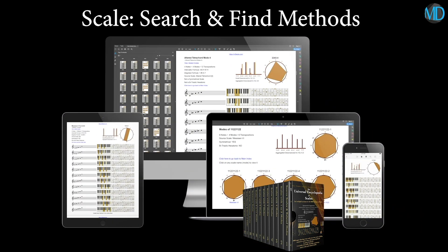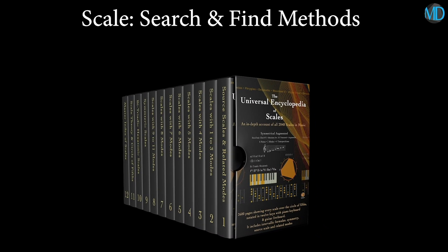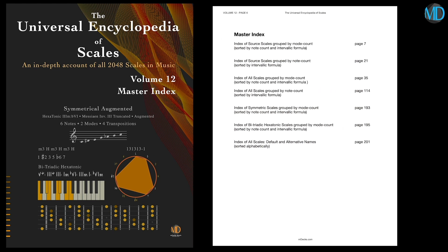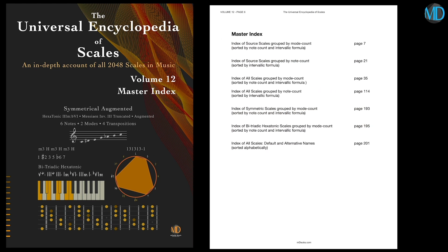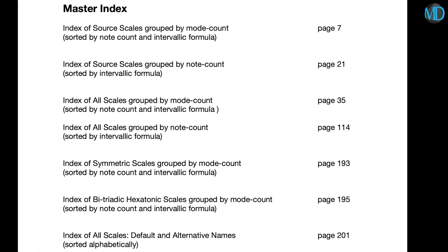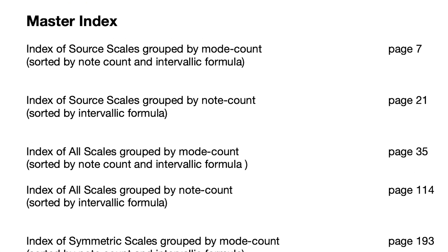We'll talk about the PDF version later on, but let's start with the paperback version. For any type of search, you will use volume 12, the master index. The master index contains several indexes that you can use to find scales from different perspectives. There are seven different indexes.